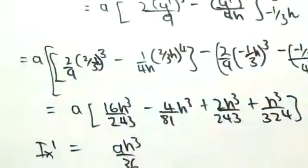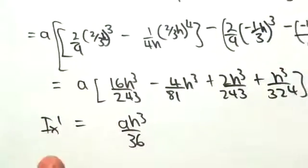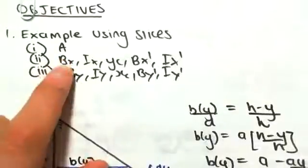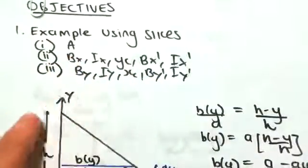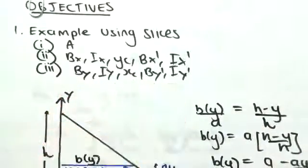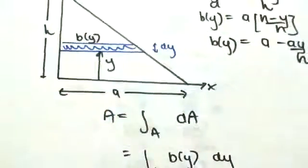So there is our ix dash, our second moment of area in reference to our centroidal axis. Okay guys, we're now going to go on. So we've done all of this, part 2. We're now going to do part 3 in the next video in terms of by, iy, xc, by dash, and iy dash. But the process is the exact same. We're just going to be looking at a vertical strip. So we'll see you there guys.